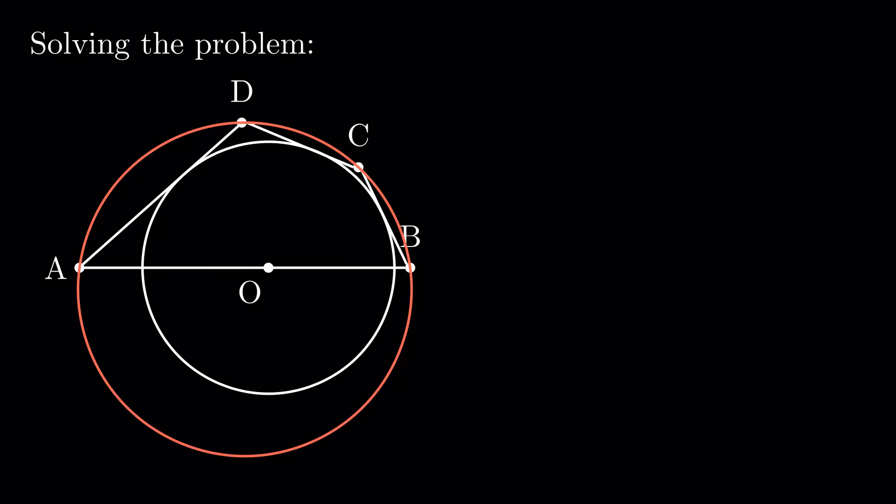Remember that we are interested in proving that AD plus BC equals AB. First, we make a construction that helps us understand its sum better. Choose point P on AB such that AP equals AD, and assume without loss of generality that P is between O and B. Triangle ADP is isosceles, so ADP equals APD. Using the sum of angles in a triangle, we get that APD equals 180 degrees minus DAP divided by 2, which equals DCB divided by 2, which equals DCO.